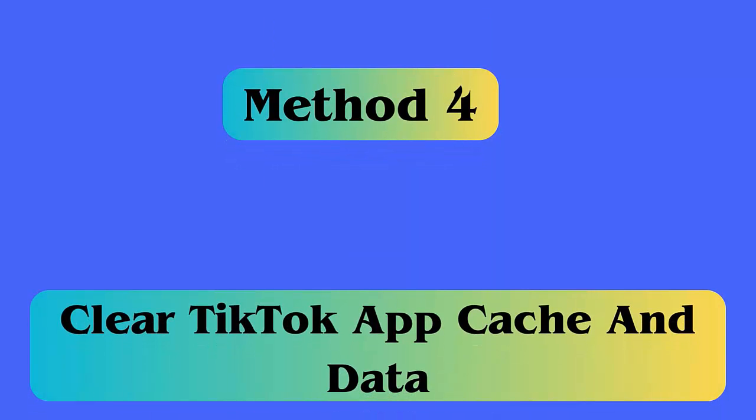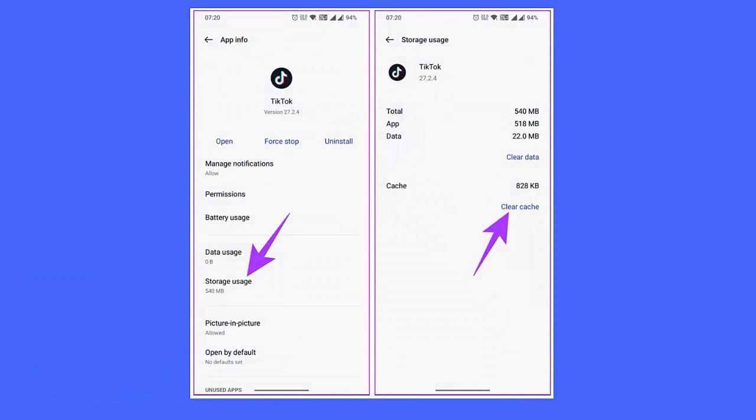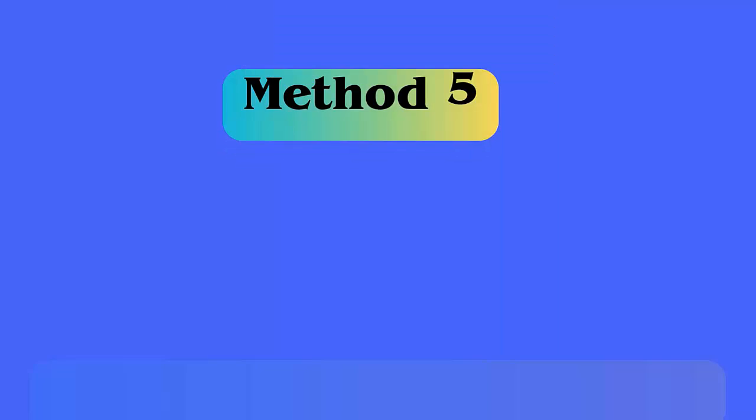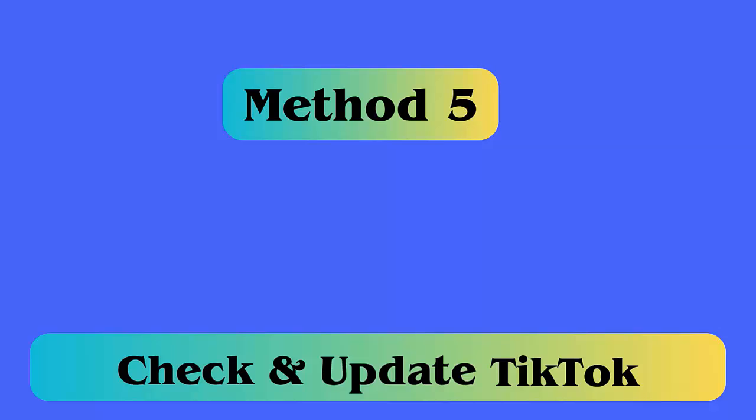Method 4: Clear TikTok app cache and data. Follow these steps: first, open Settings on your Android phone, click on Apps, then Apps Management, choose TikTok, click on Storage, and then tap the Clear Cache option.